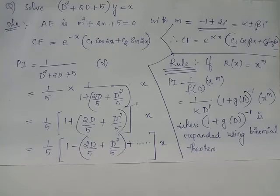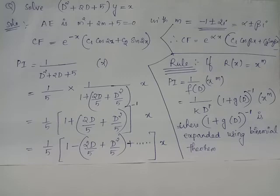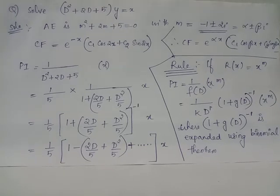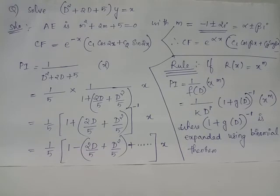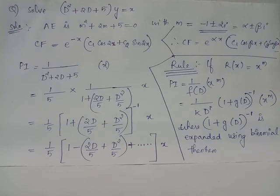By the binomial theorem, 1 plus y the whole inverse equals 1 minus y plus y squared minus y cubed plus etc. Here, 1 plus 2D by 5 plus D squared by 5 the whole inverse equals 1 minus 2D by 5 plus D squared by 5 plus etc. We are not interested in higher powers because the input is x whose power is 1, and the differential operator D squared is capable of vanishing the input x to 0, since D squared acting on x equals 0. Looking at the input x raised to m, we decide how many terms of the binomial expansion to consider.